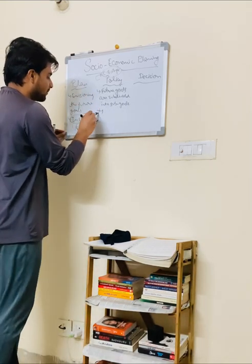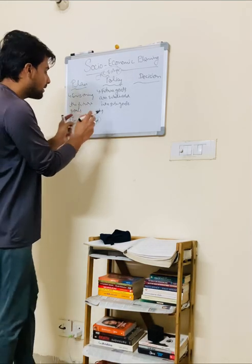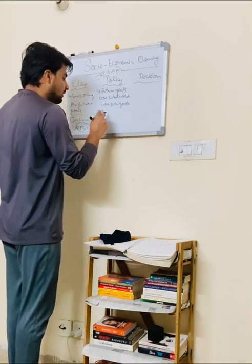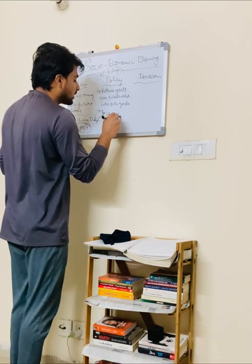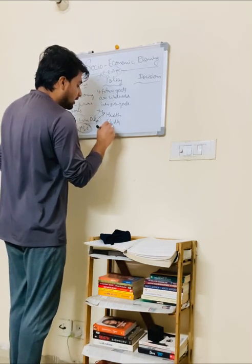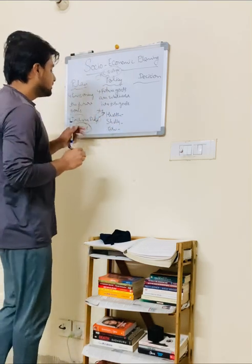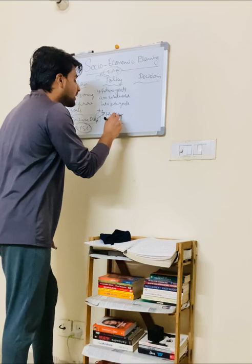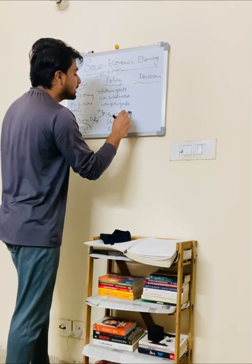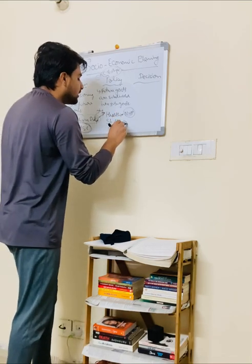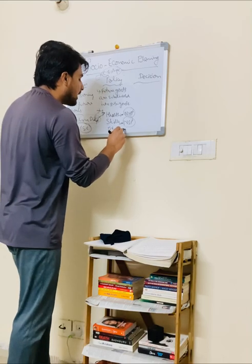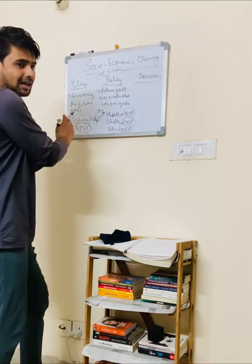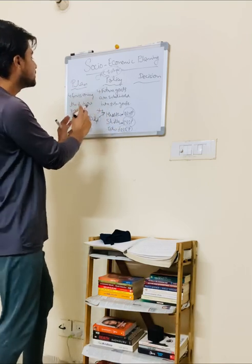What did we do here? We said we will achieve inclusive development. But now you have to see how you achieve that inclusive development. You have to focus on health, skills, and education. When you focus on these things, you achieve inclusive development. So you need to design a health policy, a skills policy, and an education policy, so that our plan has a proper policy that we can achieve.